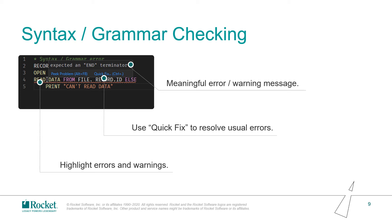Meaningful error and warning messages will be provided. In this screenshot, the error is the read statement lacking an end terminator. At the same time, for some common or high-frequency syntax errors — for example, missing keywords, wrong format, or uninitialized variables — we would like to provide a quick fix feature to help developers correct the code easily, without needing to spend too much time studying the Basic syntax. With one click of the quick fix button, the missing terminator will be added to the read statement automatically. Besides, all syntax errors will be listed in a problem window, which can help you locate to the code line quickly.